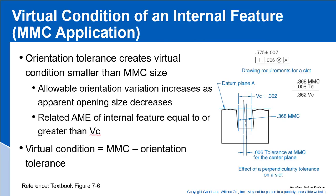Here's an example of applying virtual condition to an internal feature of size — in this case, a slot. The feature control frame shows a slot at 375 plus or minus 7 thousandths, with a perpendicularity tolerance of 6 at MMC. We calculate virtual condition by taking the MMC of the slot, which is the minimum slot size of 368 thousandths, and subtracting the 6 thousandths orientation tolerance to get a virtual condition of 362. The orientation tolerance creates a virtual condition smaller than the MMC size.